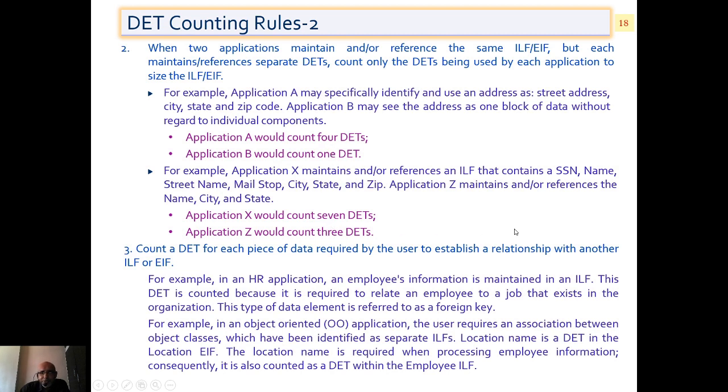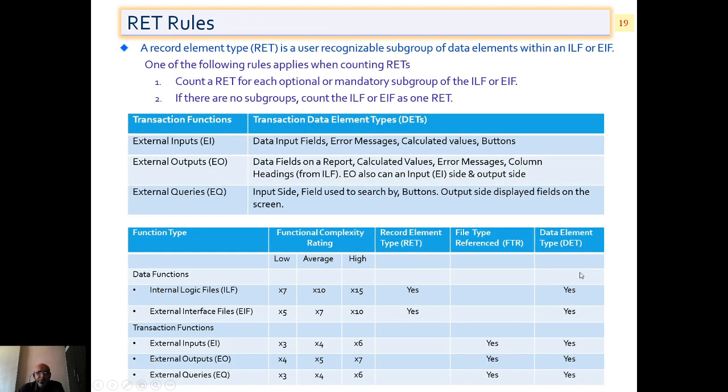Now, here it is seven versus three. ILF consists: SSN number one, name two, street name three, mail stop four, city, state, and zip. This total comes up to be seven. Application Z maintains only name, city, and state, so it will count only three DATs. So it is based on the attributization also. And third, count DATs for each piece of data without the direct reference to the element. This is a shorthand RET rule: record element type. Count RET for each optional or mandatory subgroup of ILF and EIF. Transaction functions: EI, EO, EQ. Just see what is being checked for EI, external inputs: data input fields, error messages, calculated values, and buttons. Here also, you will get data fields on report, calculated values, error messages, column headings, and so on. Specialty can be the column headings that you can identify. EQ, input side and output side, as we have seen with the previous slides.